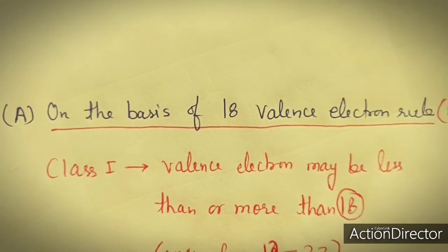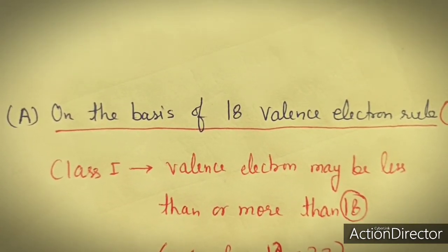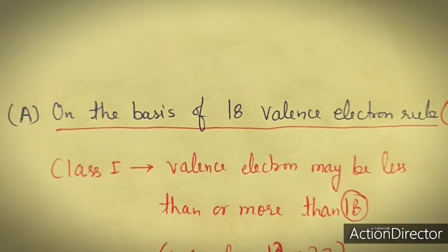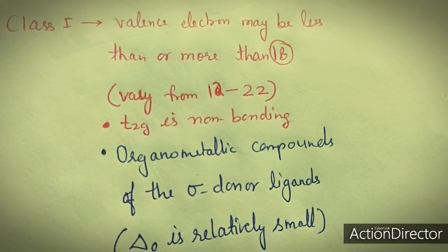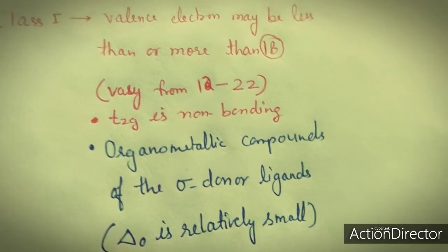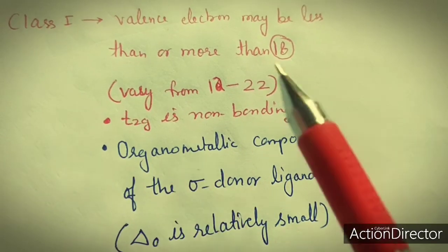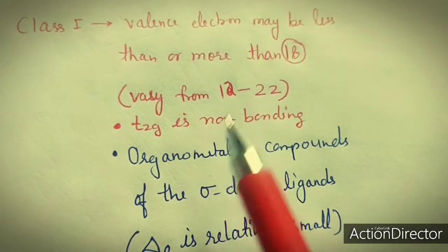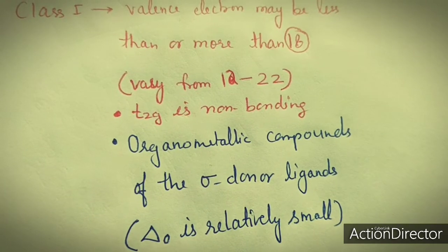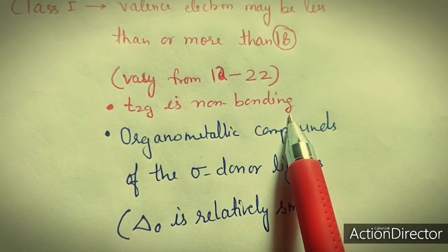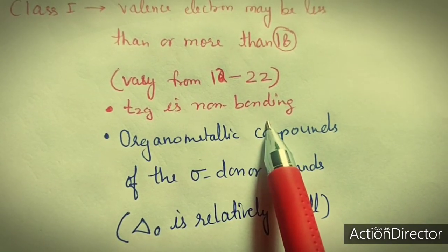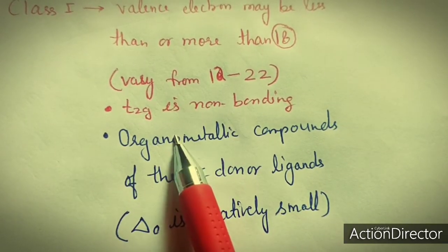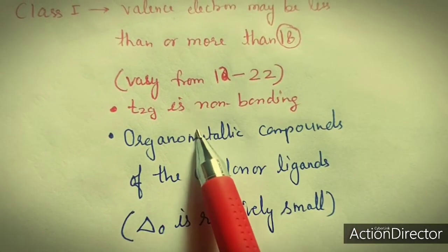On the basis of 18 valence electrons, these can be further classified into three classes: class 1, class 2, and class 3. Class 1 organometallic compounds include compounds that have less than or more than 18 valence electrons. The number of valence electrons may vary from 12 to 22, and in this case T2G remains non-bonding. These are complexes with sigma donor ligands where the metal is of the 3D series.